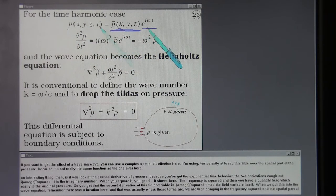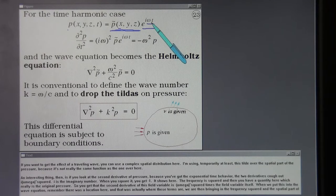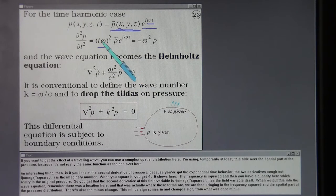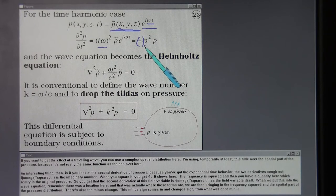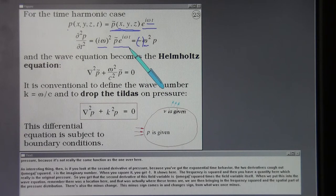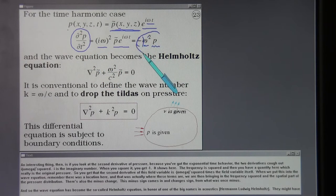An interesting thing then is if you look at the second derivative of pressure because you've got the exponential time behavior, the two derivatives cough out i omega squared. i is the imaginary number. When you square it you get minus one which shows here. The frequency is squared and then you have a quantity here which really is the original pressure. So you get that the second derivative of this field variable is minus omega squared times the field variable itself.